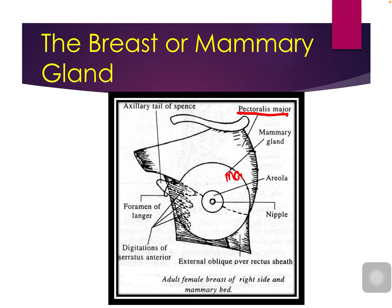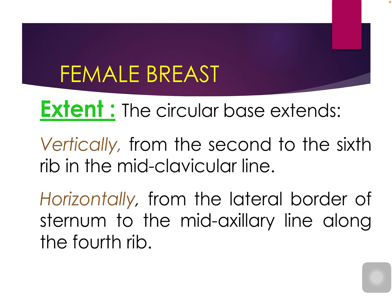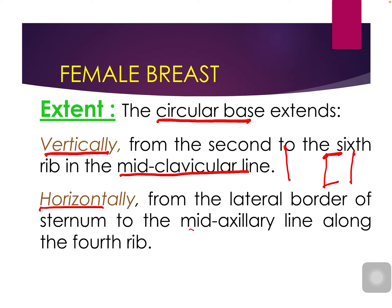Now we will see the extent of the mammary gland — the circular base extent. It extends vertically from the second to the sixth rib in the mid-clavicular line. Horizontally, from the lateral border of the sternum to the mid-axillary line. It is a modified sweat gland present in the superficial fascia.